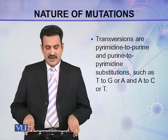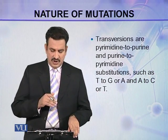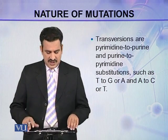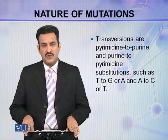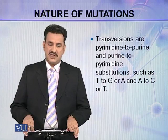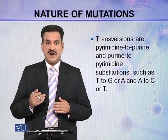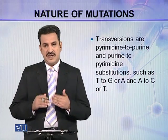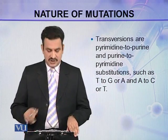Transversions are pyrimidine-to-purine or purine-to-pyrimidine substitutions, such as thymine to guanine or adenine, and adenine to cytosine or thymine. So a purine is replaced by a pyrimidine or a pyrimidine is replaced by a purine. These mutations are called transversions.